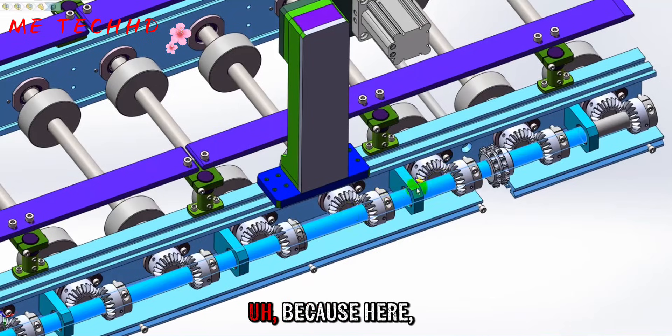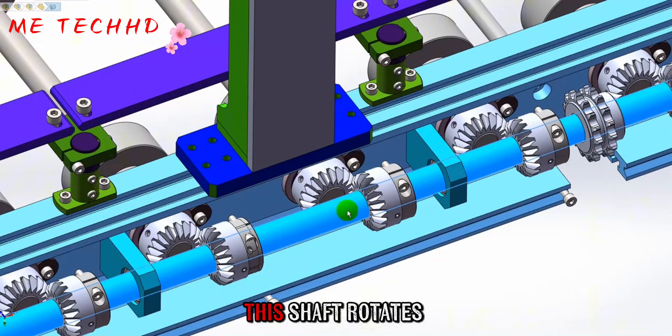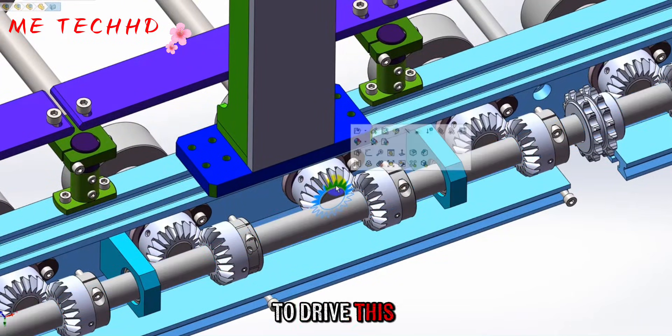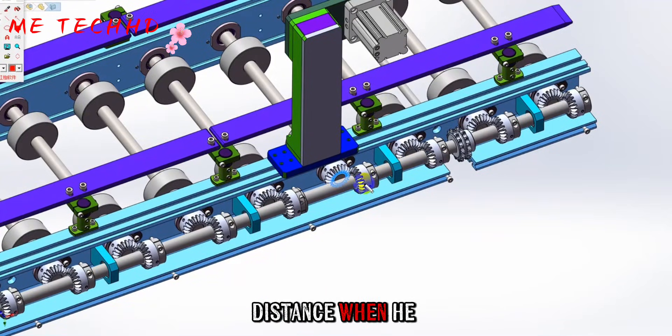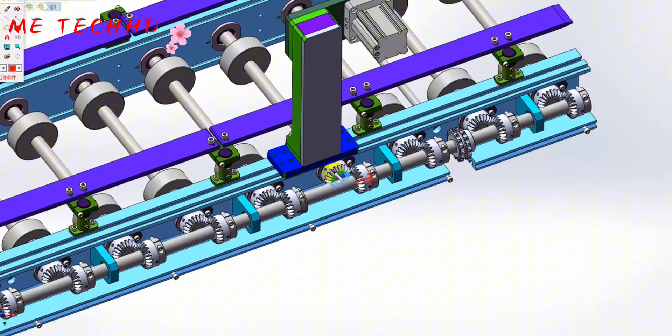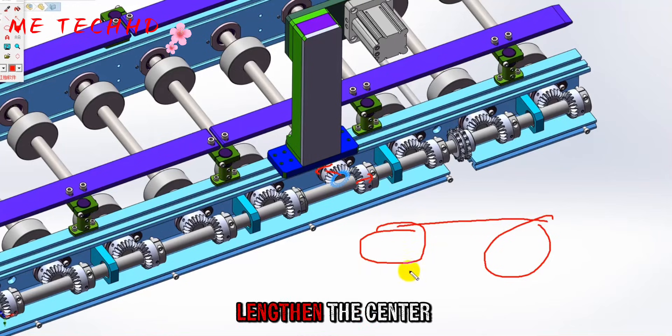For example, we pass this shaft. This shaft rotates to drive this gear. It won't widen the center distance when it transports. With chains or belts, when the chain is used, it is easy to lengthen the center distance of the belt.